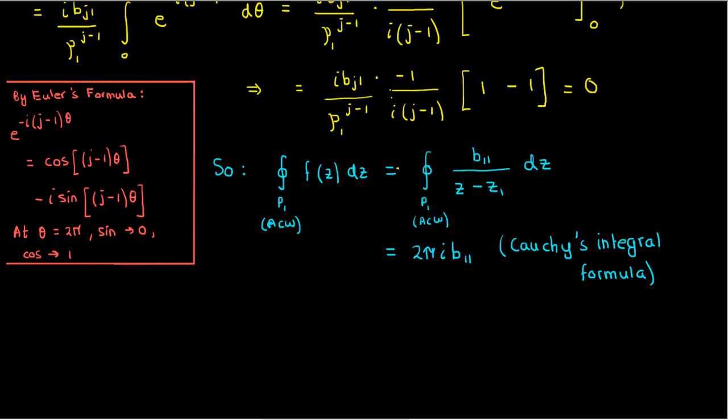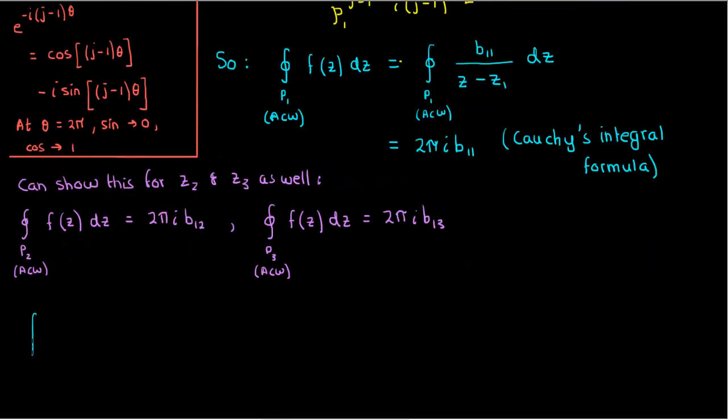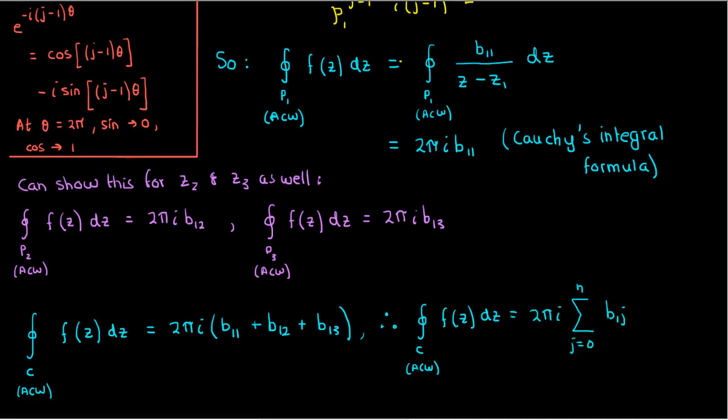Now that I've shown this result for one singular point inside the closed contour c I can show the exact same thing for the other singular points z2 and z3. The end result is that when there are three singular points the contour integral of f of z over the closed curve c is just 2πi times the sum of the residues of the Laurent expansions at z1, z2, and z3. If there's more than three singular points this naturally leads to the more general result of the residue theorem which is that the contour integral of f of z over a curve which encloses a bunch of singular points is 2πi times the sum of the residues of f at each of those singular points.